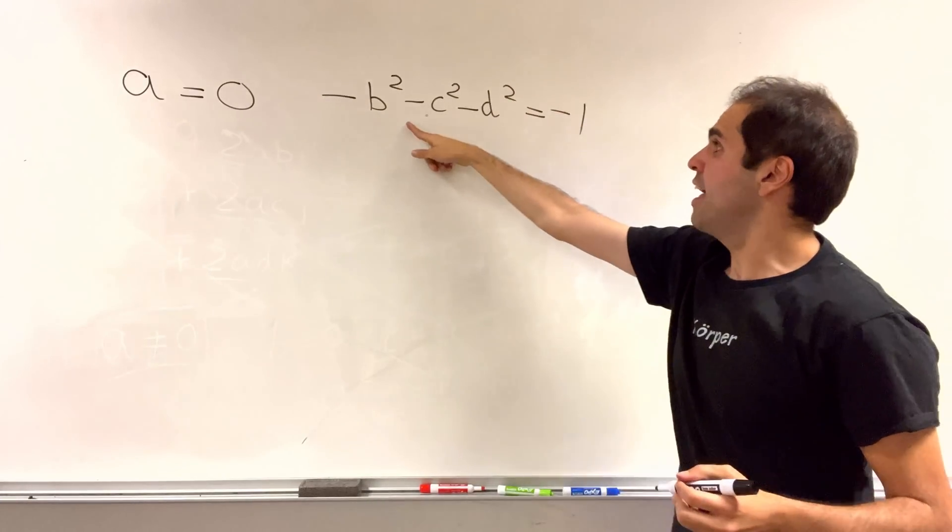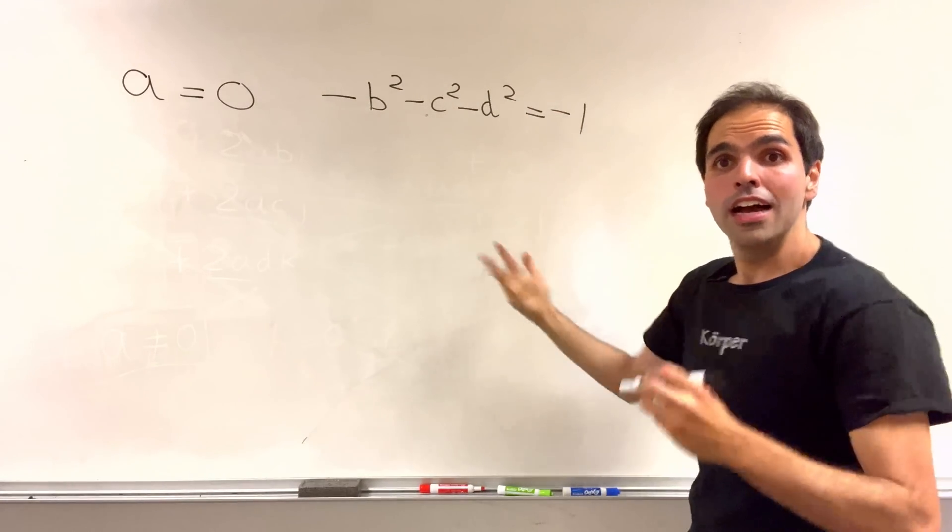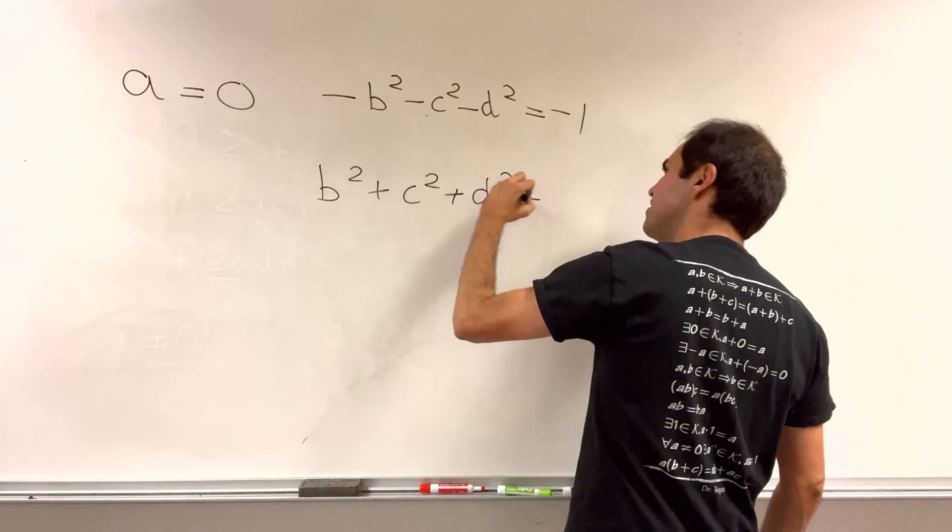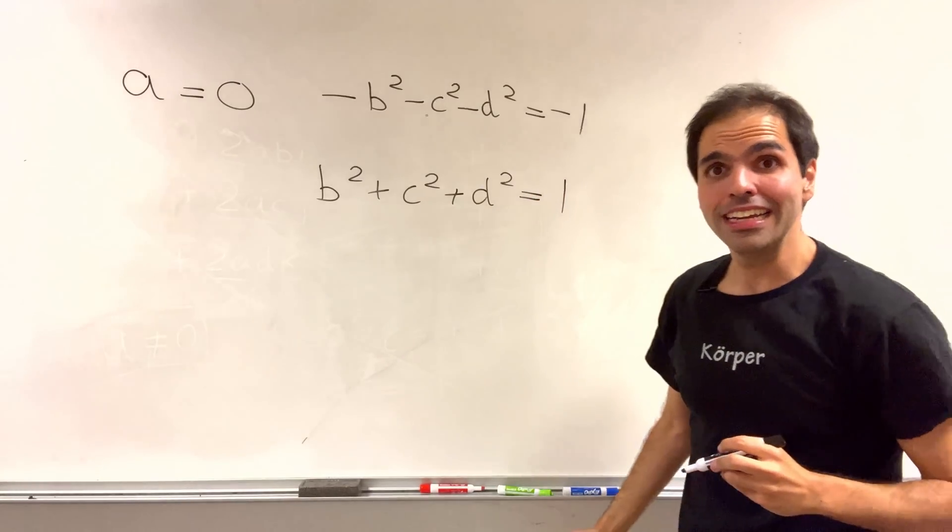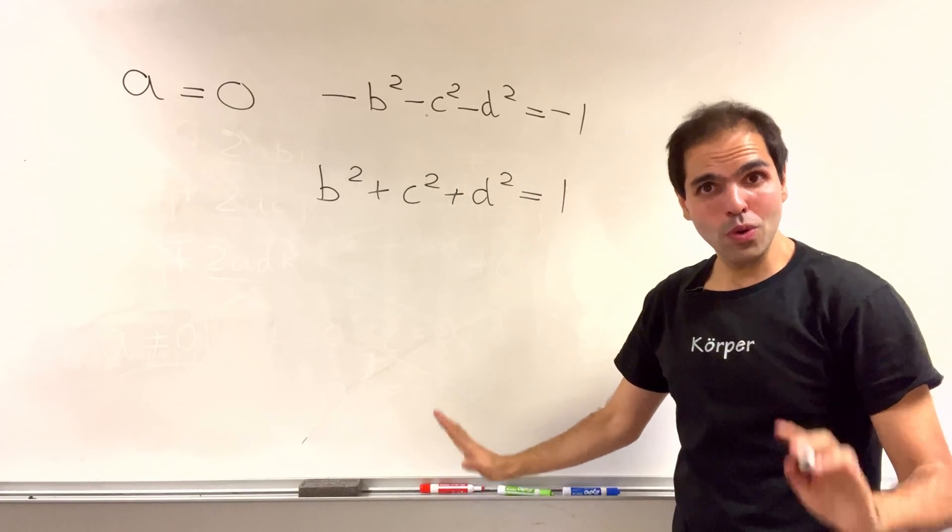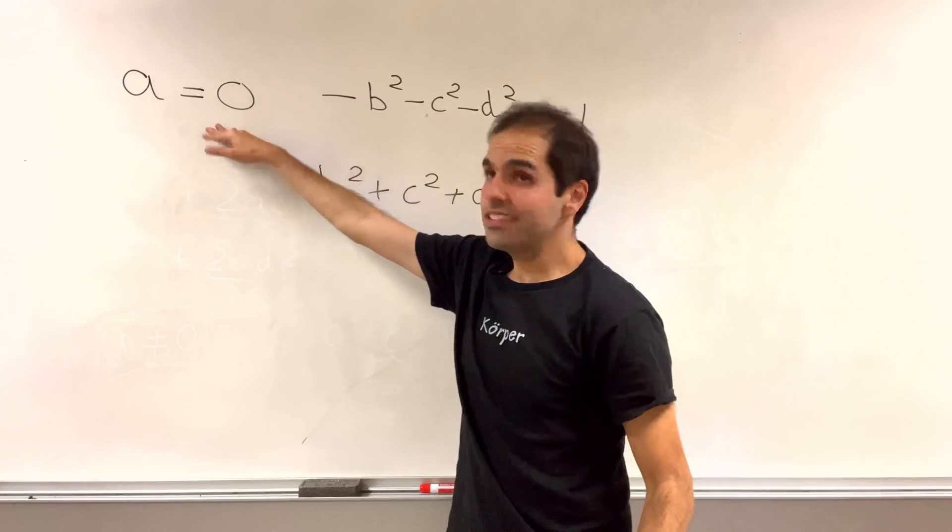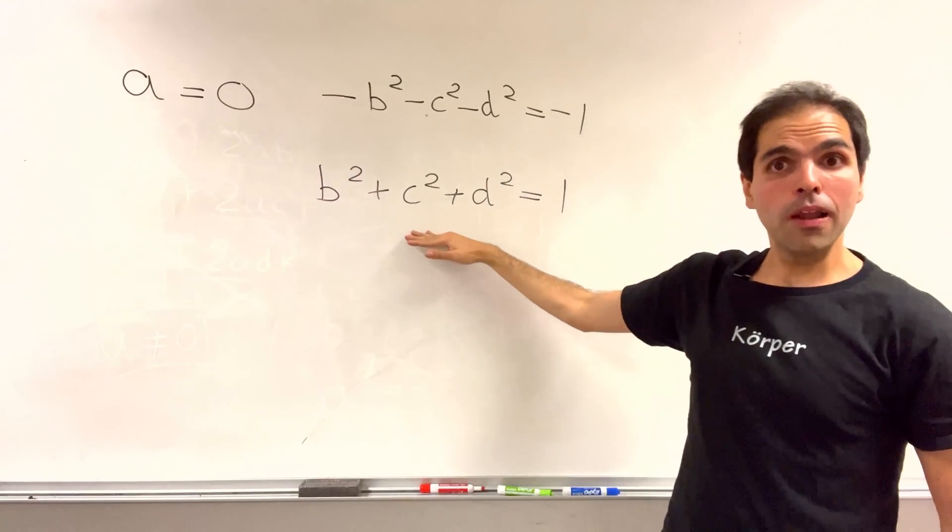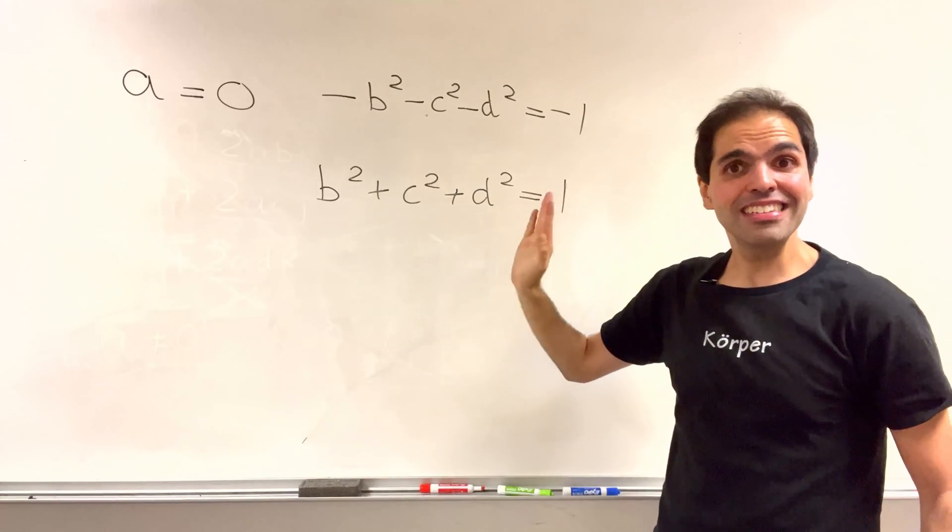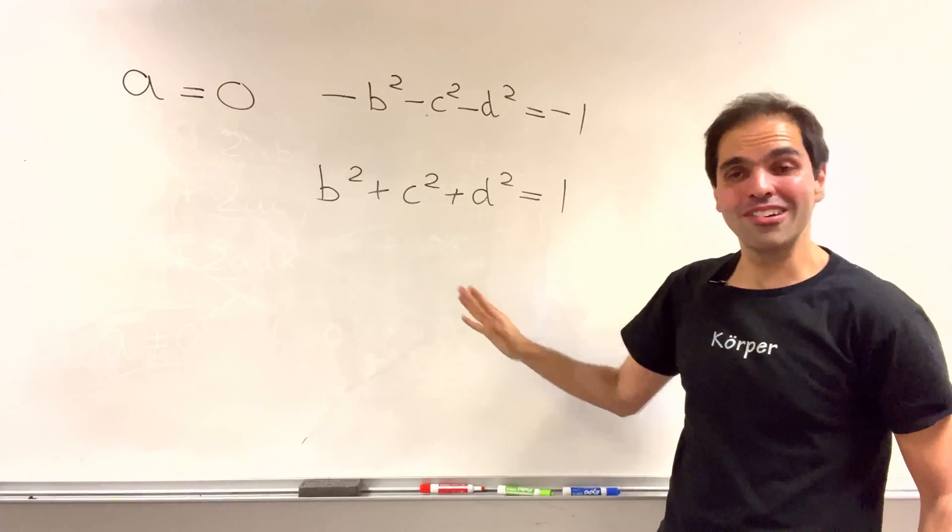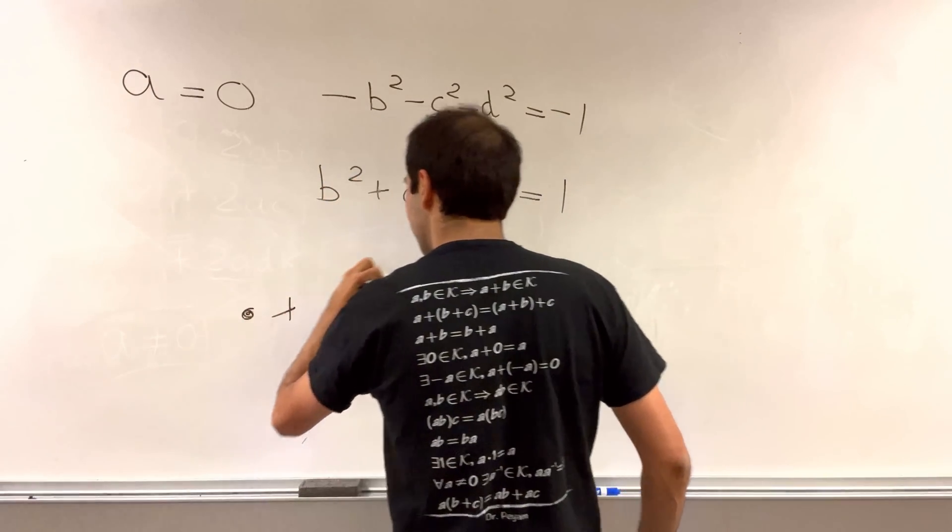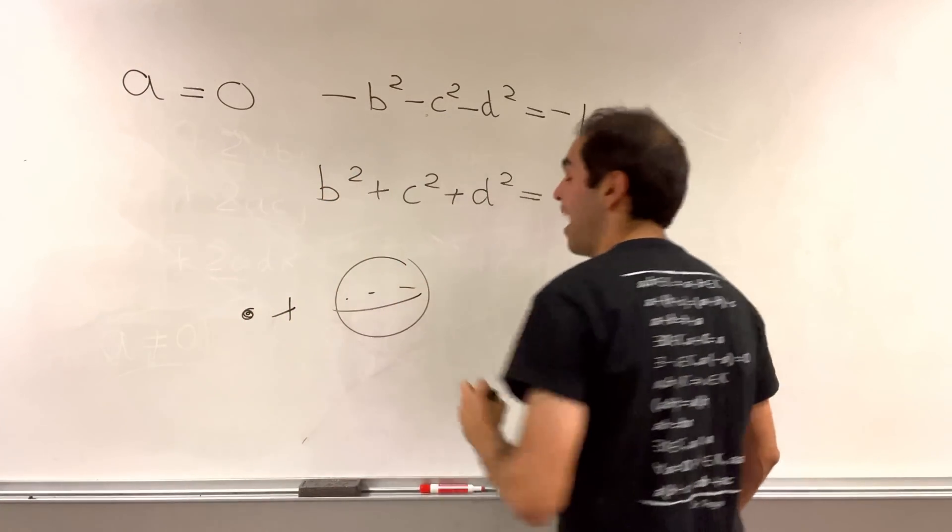a is zero, and this is minus one, which is just equivalent to b squared plus c squared plus d squared equals one. So what do the solutions look like? It's zero plus a whole sphere. Here, this is what q squared equals minus one looks like geometrically. So it's just a point, which is zero, plus an entire sphere.